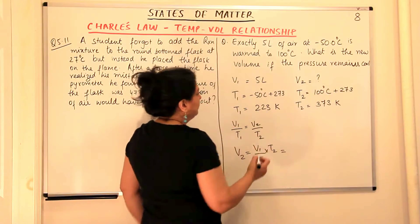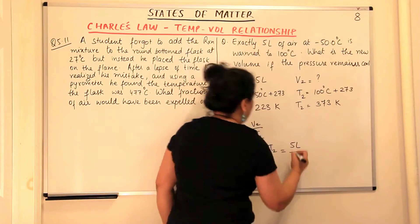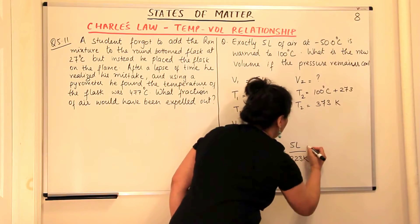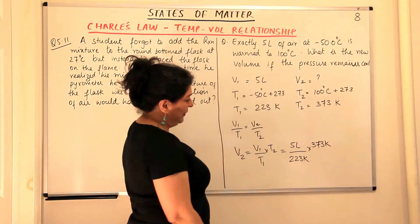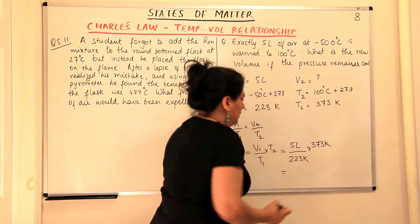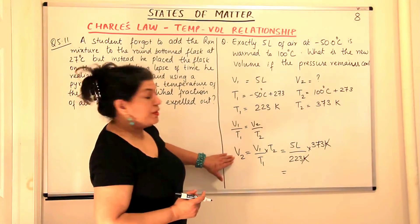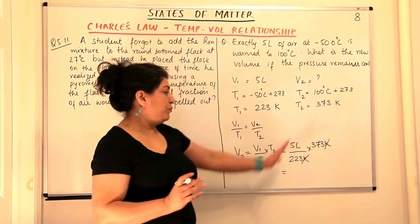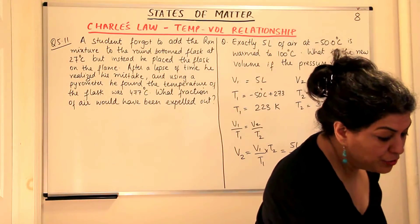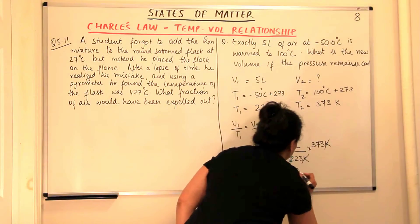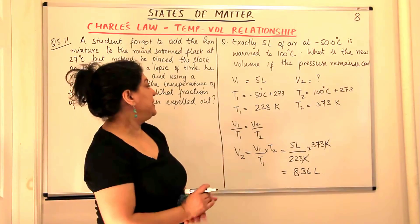Substituting the values: V1 is 5 liters upon T1 which is 223 Kelvin, multiplied by T2 which is 373 Kelvin. When you solve this, the Kelvin units cancel, so you get your answer in liters. If you are getting your answer in liters it means you plugged the values in the right places. When you solve this, the answer you get is 8.36 liters.